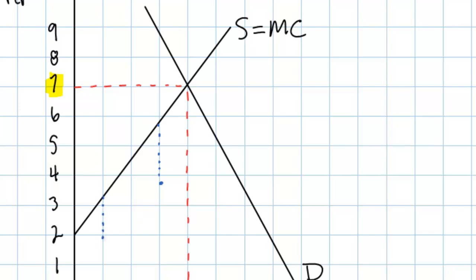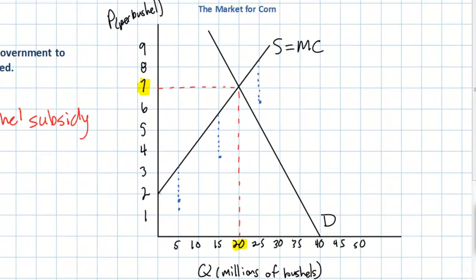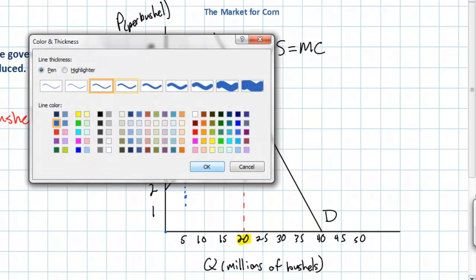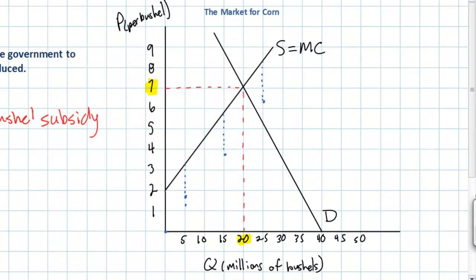We'll put a couple of points here and one more point up here. We can even look at our price intercept, which it turns out is $2. So the subsidy will shift the supply curve all the way down so that it begins at the origin. We've plotted some points exactly $2 below our original supply and marginal cost curve. Now what we can do is draw the new supply curve following the subsidy. As can be seen, the new supply curve is $2 below the original supply curve.